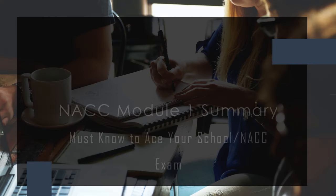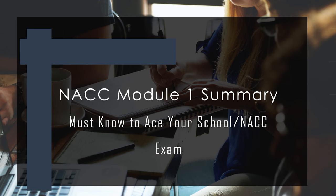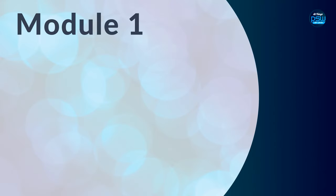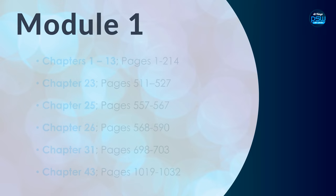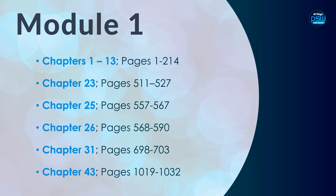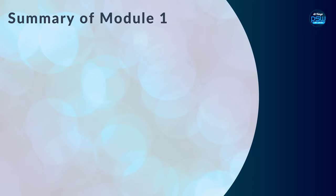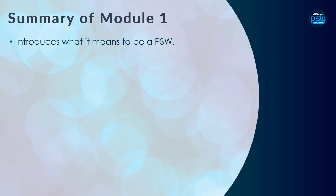Today we'll be covering module one. I'll highlight the chapters that NAC wants you to know, based on the fifth edition book. Here are the chapters listed for your reference — be sure to go over these chapters and pages. For example, chapter 23: you don't have to read the whole chapter, just the specified pages. So I'm hoping you find this video helpful. This is just a summary of what module one is all about, which is introducing what it is to be a PSW.